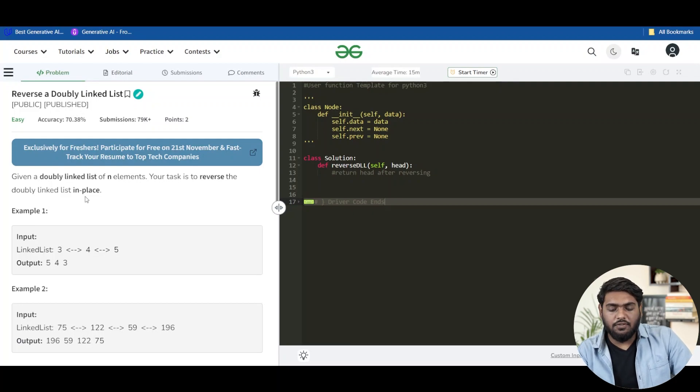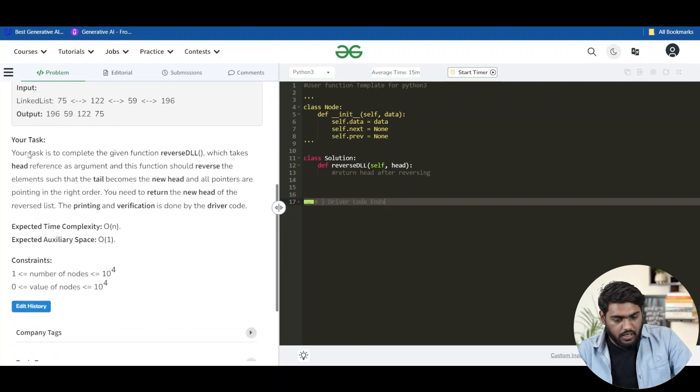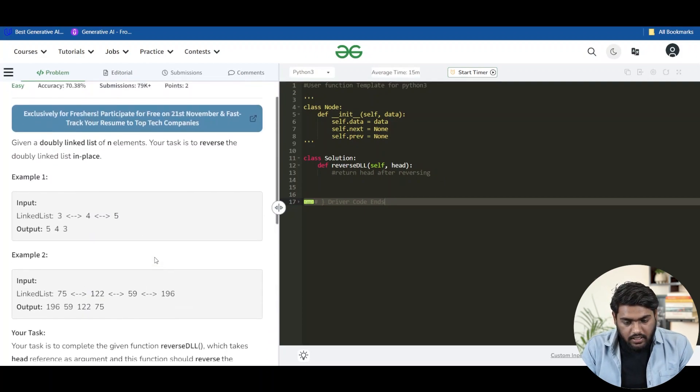What does in place mean? That means we do not have to use any extra space. We just need to move the links here and there so that the linked list is reversed. The task is we have to complete this function. Head is taken as a reference to the doubly linked list. This function should reverse the elements such that the tail becomes a new head and all the pointers pointing in the right order. You need to return the new head of the reverse list. You need to notice this. We have to return the new head and all the things will be done with driver code. Now let's try to understand the code with some examples.